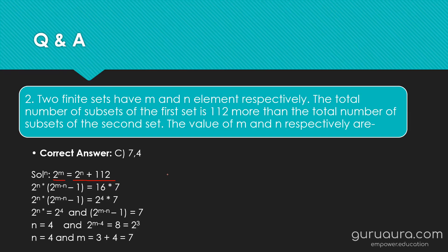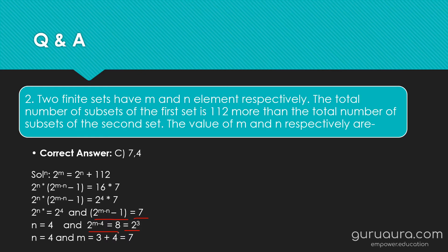Solving the equation, we get 2^N = 2^4, so N = 4. Then 2^(M−N) − 1 = 7, and substituting N = 4 gives 2^(M−4) = 2^3, so M − 4 = 3, hence M = 7. Therefore M = 7 and N = 4, giving the answer 7, 4. Hope you got the right answer. Now let's move to the next question.